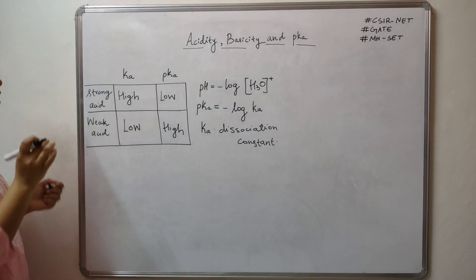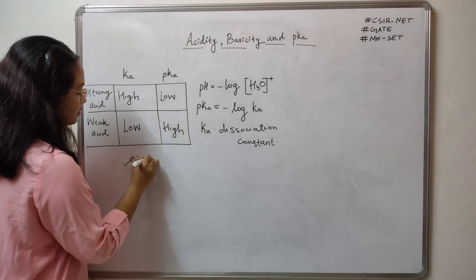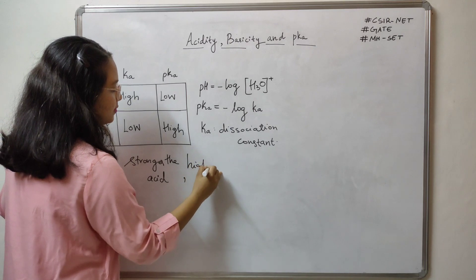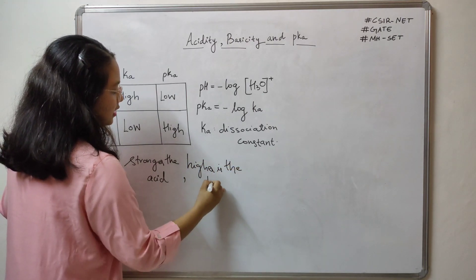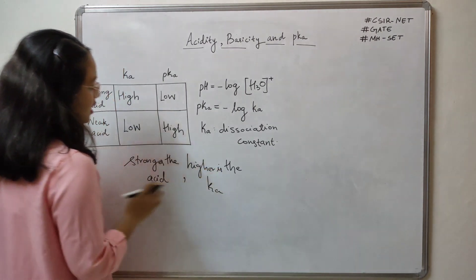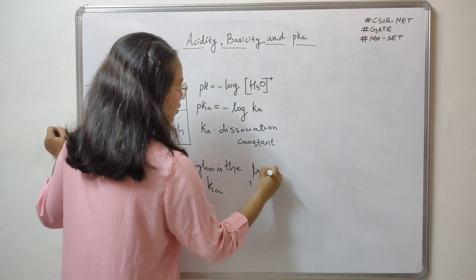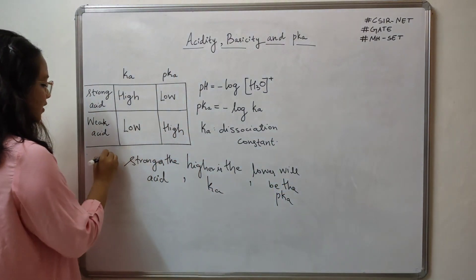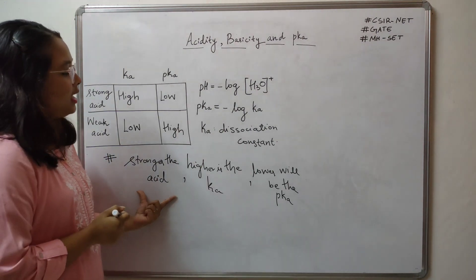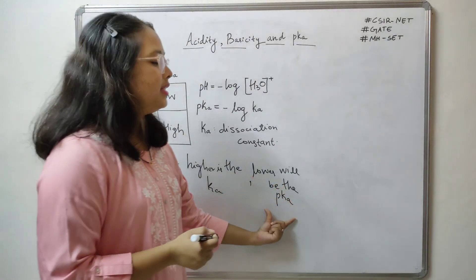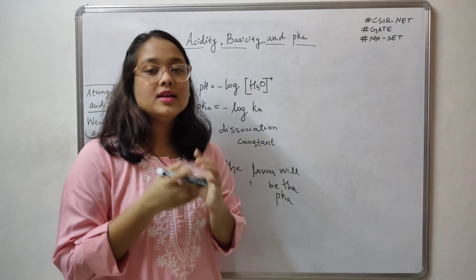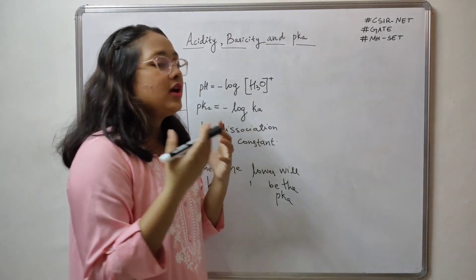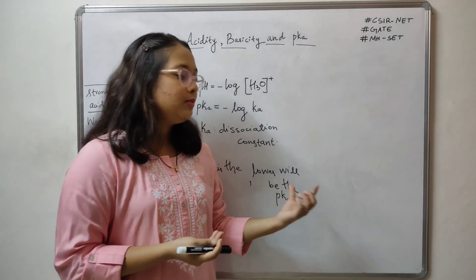We can now make a key conclusion: stronger the acid, higher is the ka, lower will be the pKa. This statement is very important. For any strong acid, the ka value will be very high and accordingly pKa will be very low. For a weak acid, ka will be low and pKa will be high.